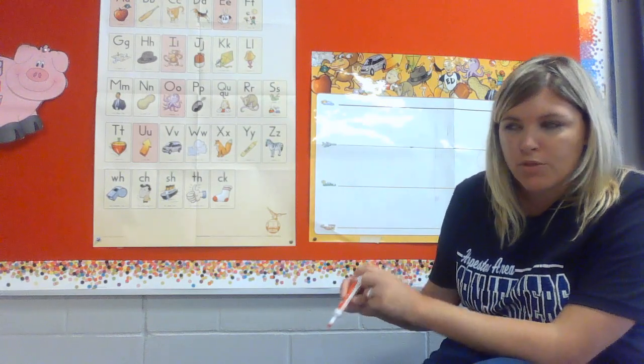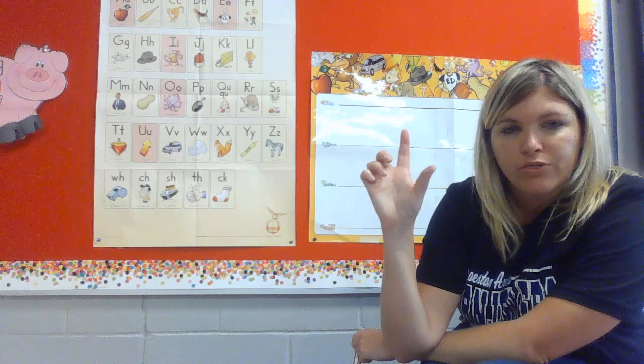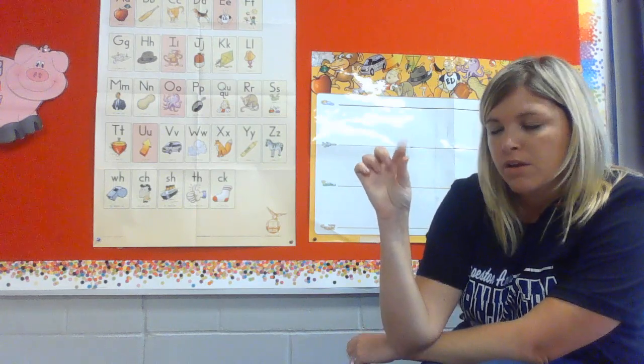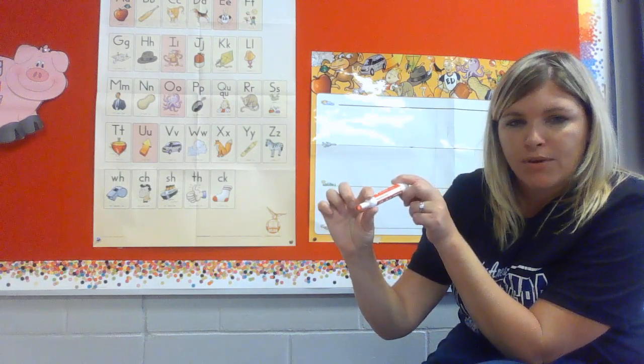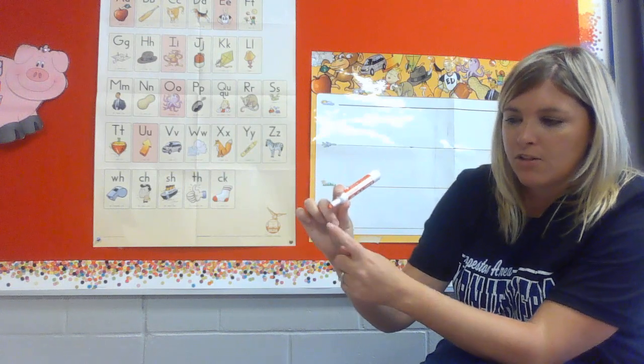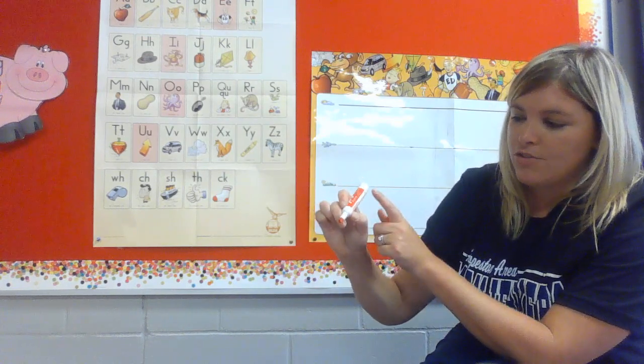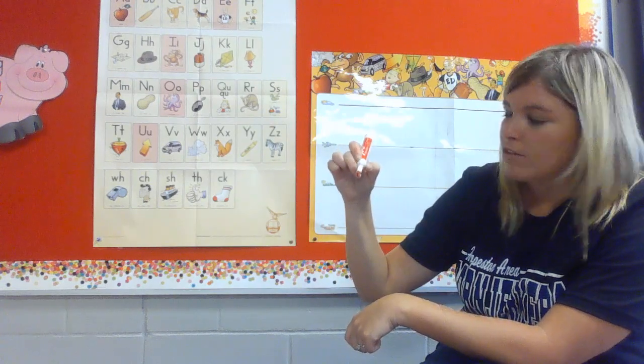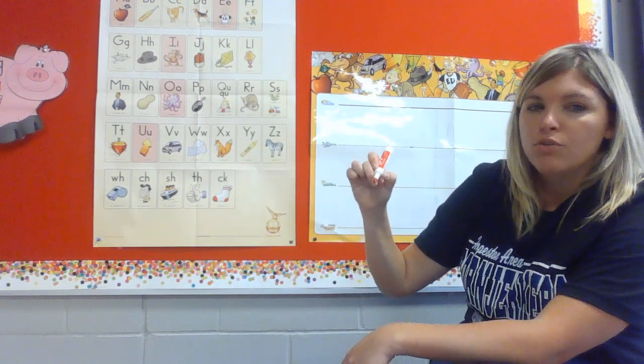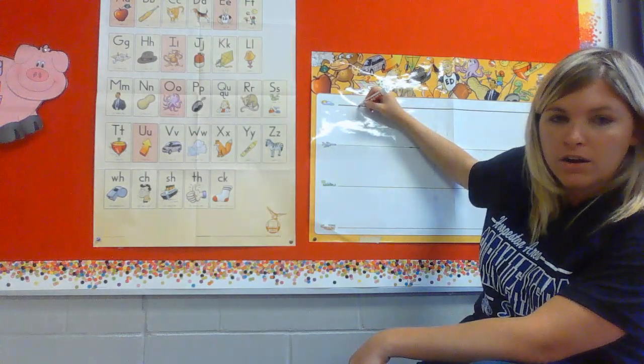And remember, we're going to practice holding our marker the right way. So you're going to pinch your thumb and your pointer finger, put the marker right in between that, and then this middle finger is going to rest right underneath. And you just kind of push it back so it's a little table.